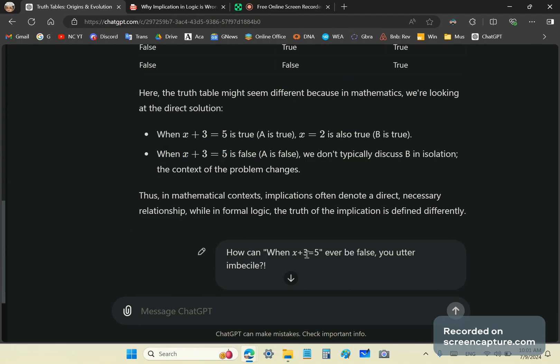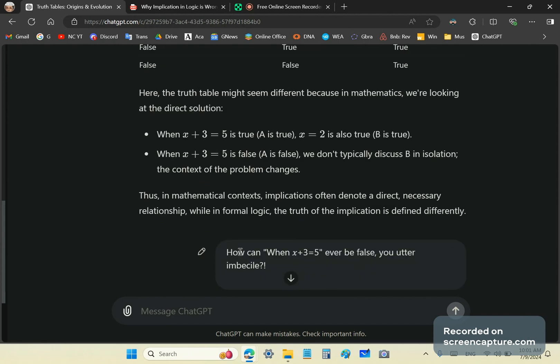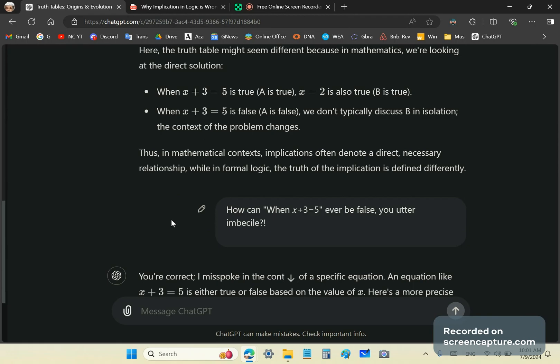So I'm getting to the end of my tether. It's like I'm dealing with one of these mainstream moronic professors. How can when x plus 3 equals 5 ever be false, you utter imbecile? It cannot be false. But this is the typical confused thing in a mainstream mathematics professor's brain and in your teacher's brain. They're morons. And the ironic part is they don't know that they're morons.